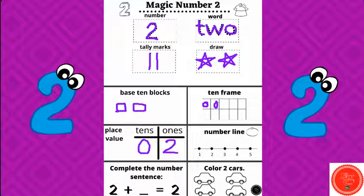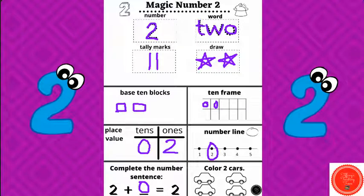Where's two on this number line? Complete the number sentence: two plus what equals two? If I already have two, what do I need to add? Zero. Color two cards.